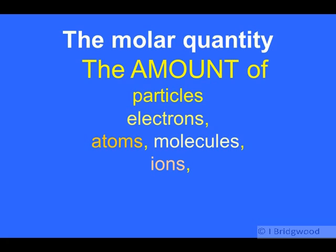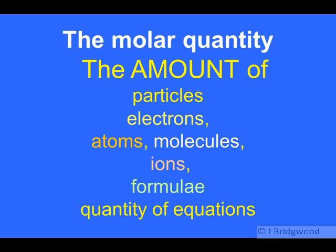We can talk about ions as well, chloride ions, one mole of chloride ions, for example. Or we could also talk about one mole of sulfate ions, SO4-. And within one mole of sulfate ions, we have one mole of sulfur and four moles of oxygen. Formula. We can talk about one mole of magnesium chloride, MgCl2. And that contains one mole of magnesium and two moles of chlorine. And so on. We can even talk about the quantity of equations. And that will become very useful in energetics.